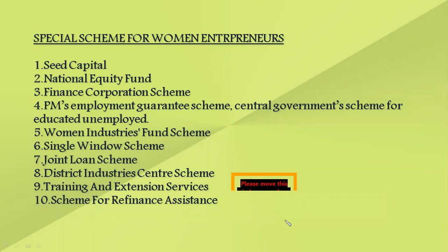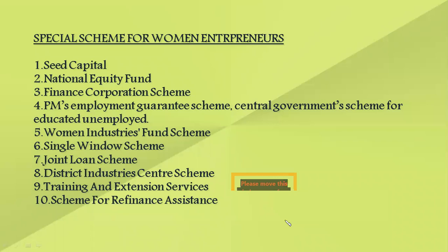The Prime Minister's Employment Guarantee Scheme is given by the central government with an age limit of 35 years and minimum education of 10th standard. 95% of the loan is given by the bank, and the candidate is not expected to contribute anything — instead, a subsidy is given. The Women Industries Fund Scheme provides around 15% of seed capital. The Single Window Scheme facilitates women entrepreneurs to get loans, working capital, and all services from one place, applicable to both male and female, with up to 20 lakhs available.